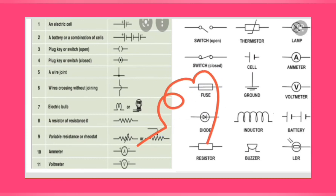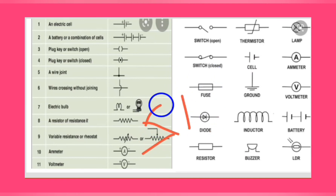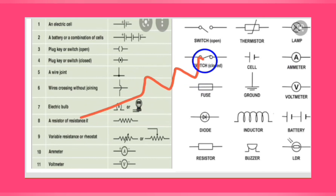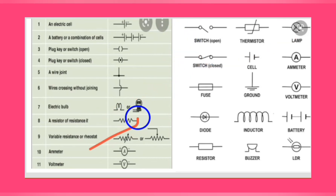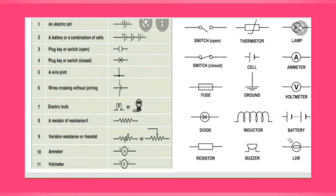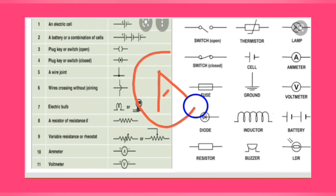An electric bulb is represented by a circle with a specific symbol inside. A resistor is represented by a straight rectangular line symbol. A variable resistance or rheostat is the same resistor symbol with an arrow mark on it. An ammeter is represented by a circle with the letter A, with positive and negative terminals.